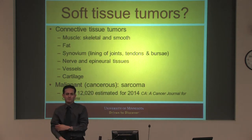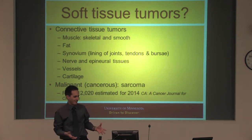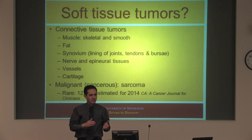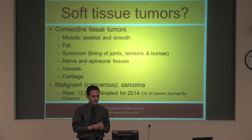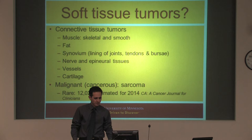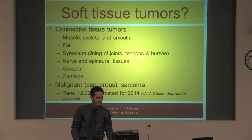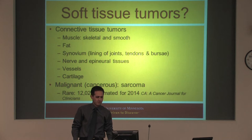When we say soft tissue tumor, that's a really general term — it's a very loaded term. It refers to connective tissue tumors primarily: muscle, fat, synovium (that's the joint lining), epineural tissues, vessels, and cartilage. The malignant ones — soft tissue sarcomas — there are about 12,000 of them this year. Bone sarcomas are around 3,020, so it's actually closer to a 4-to-1 ratio.